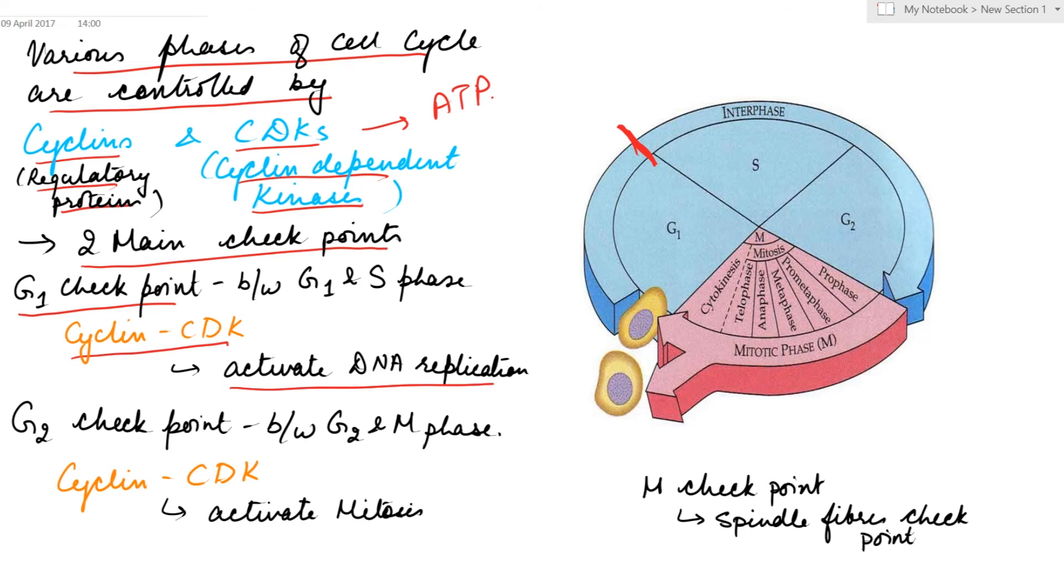The second is the G2 checkpoint, present between the G2 stage and as the cell enters the mitotic phase. They activate mitosis. A third M checkpoint can also be seen at the end of metaphase. It is known as the spindle fibers checkpoint.